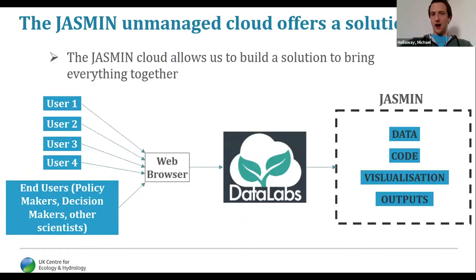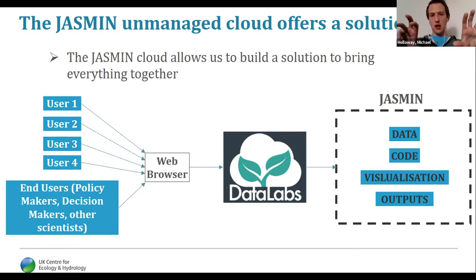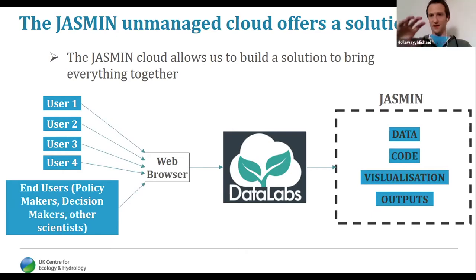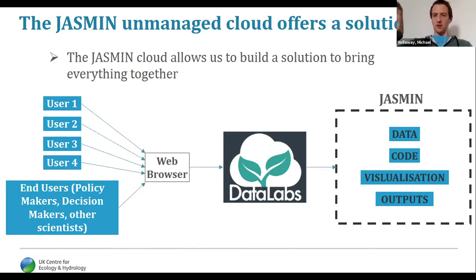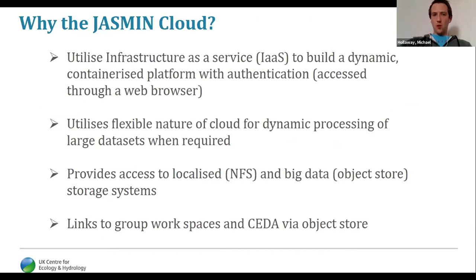The JASMIN cloud offered a perfect solution for building a platform that can bring all this together. This diagram shows how you can have everything in one place and working together. All users and end users access the system through a simple web browser — you don't need any specialist software. Everything sits in one place on the JASMIN cloud: the environment is consistent, everyone is in the same place, and more importantly everyone is working off the same version of the data, the same compute environment, and the same code — keeping everything consistent and coherent.